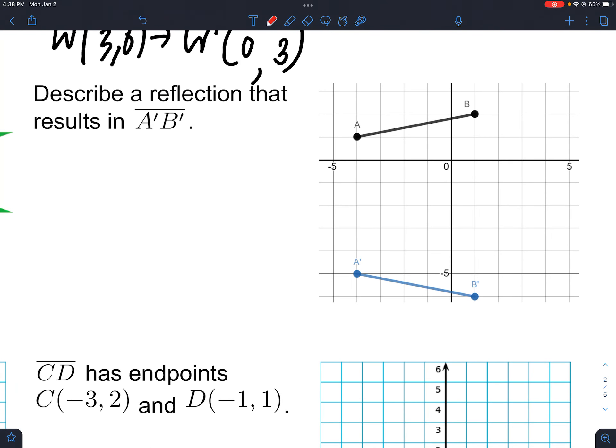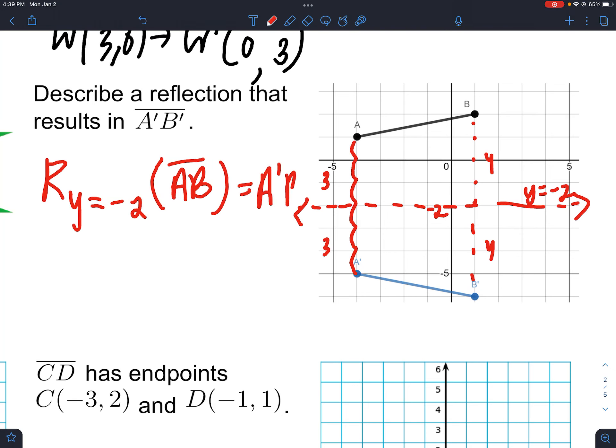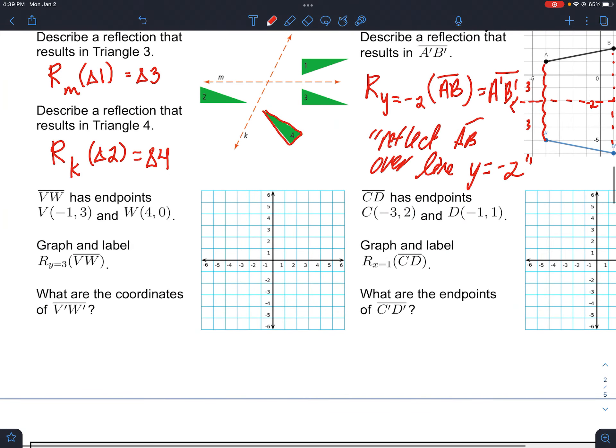And remember at the beginning we talked about in reflection, the points like A and A prime are the same distance from the reflection line. So if we count 1, 2, 3, 4, 5, 6, if we just go to the point, 3 and 3, that's where the reflection happens. And this is 1, 2, 3, 4, 4, and 4. You see, so where is this line? Well, it's at negative 2, so it's y equals negative 2. So if we reflect line segment AB, that should be A prime B prime. So reflect line segment AB over the line y equals negative 2.